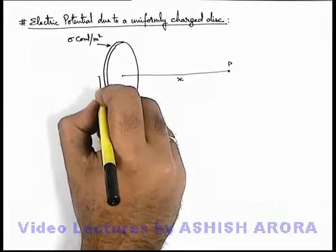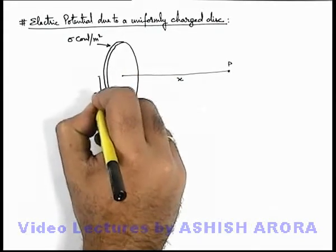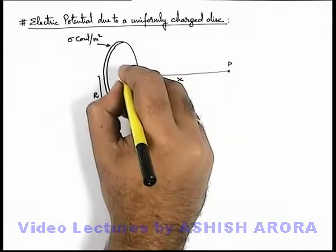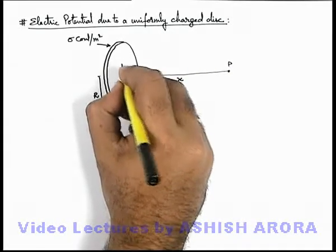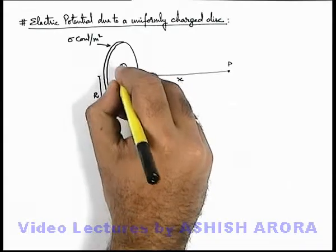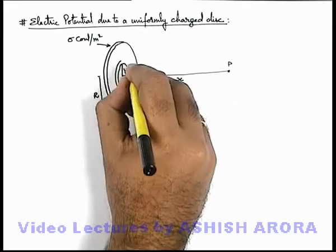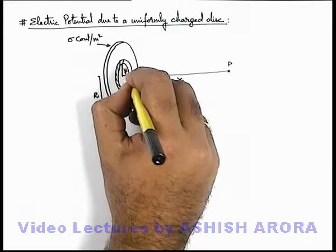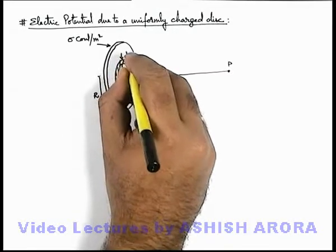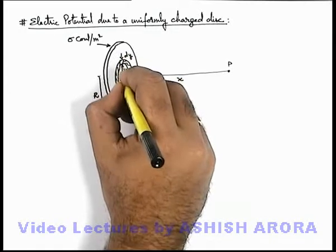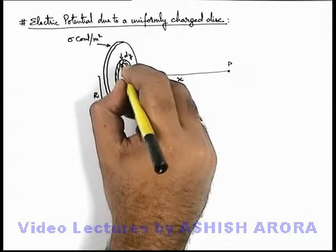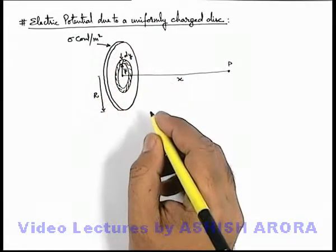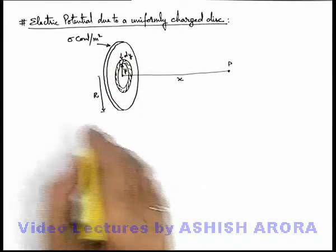The radius of disc is r. To find potential at P, we consider an elemental ring of radius y and width dy. We integrate all such elemental rings from y equals zero to r, then the whole disc will be formed.